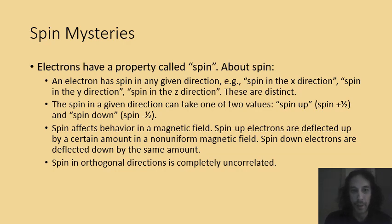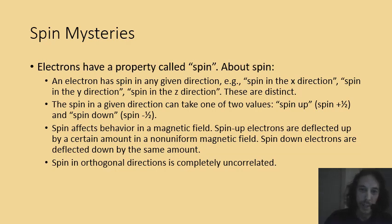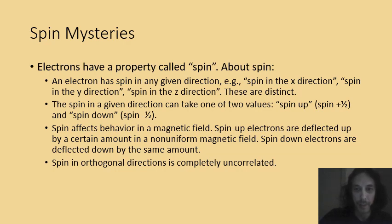First there's a property that electrons have called their spin. The way this property manifests itself is basically if you have an electron go through a non-uniform magnetic field it will get deflected by a certain amount — either up or down, always by the same amount. Half the electrons go up and half of them go down. The ones that go up are said to be spin up and the ones that go down are said to be spin down.